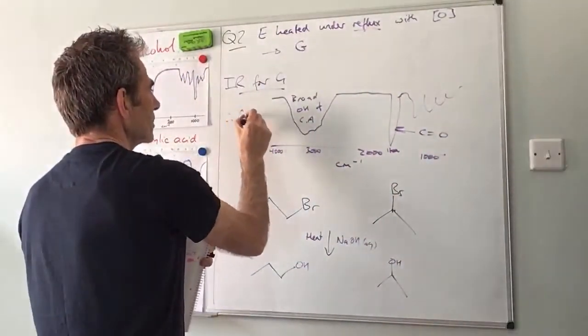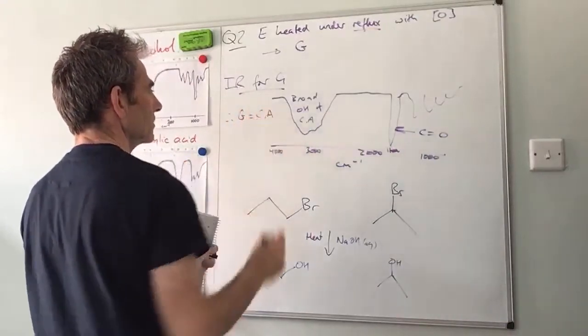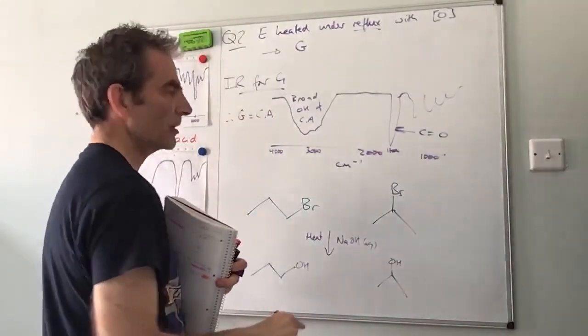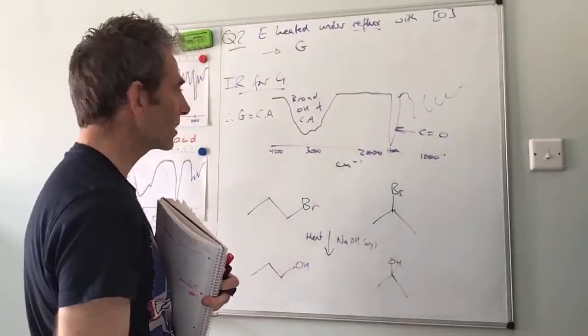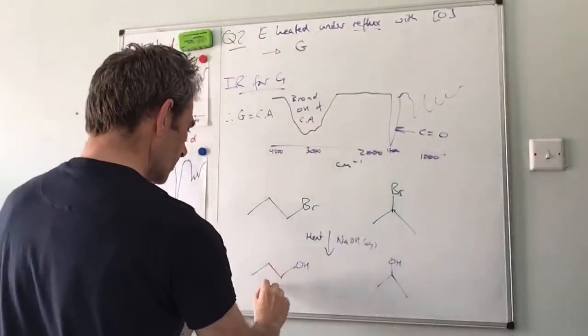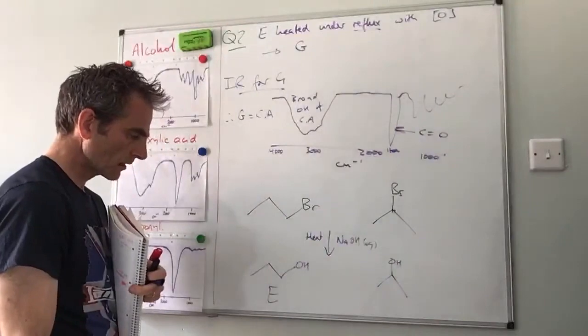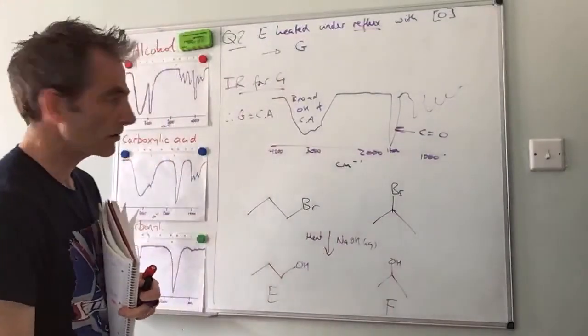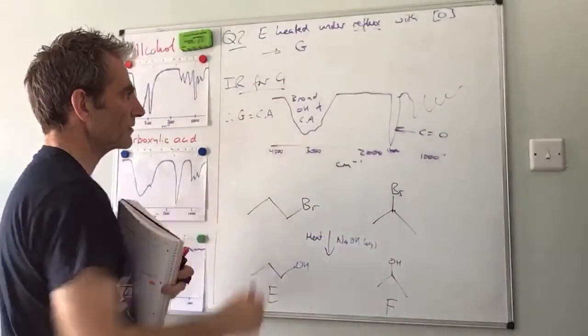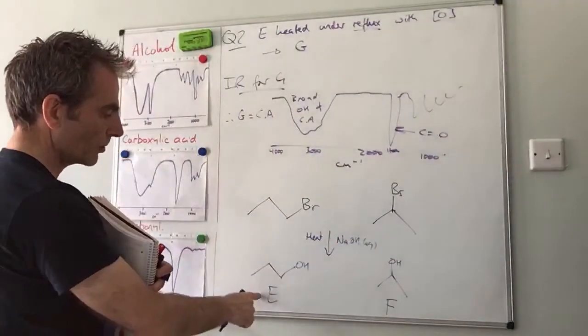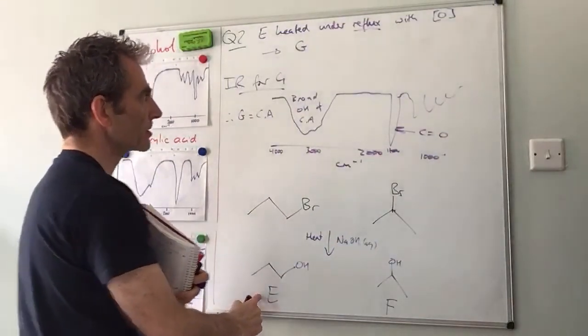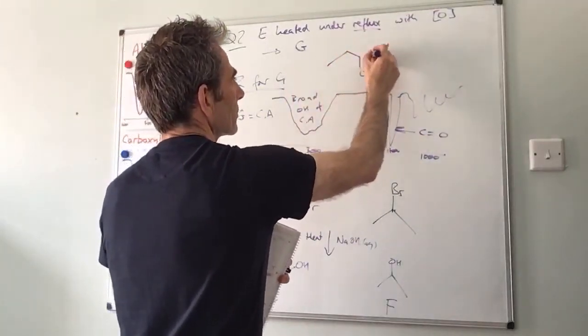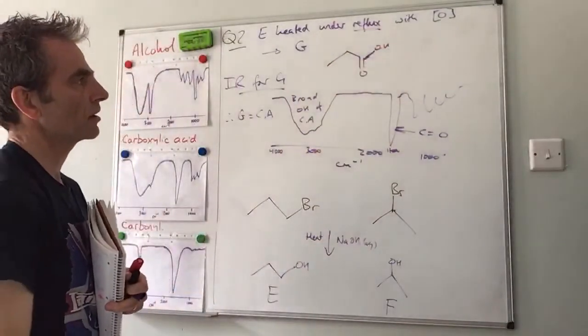Therefore we can say G is a carboxylic acid. So if G is a carboxylic acid, that means E, the alcohol that it was formed from, must be a primary alcohol. So this one is E, and this one therefore must be F - the secondary alcohol must be F. So G, we haven't said what G actually is. What would that turn into if you oxidized it under reflux? G must be propanoic acid.